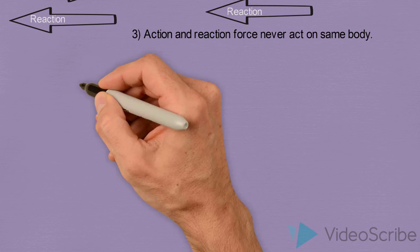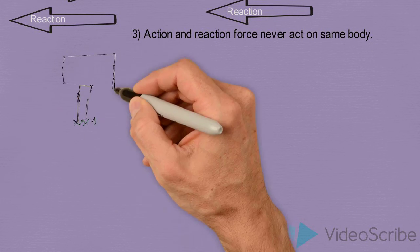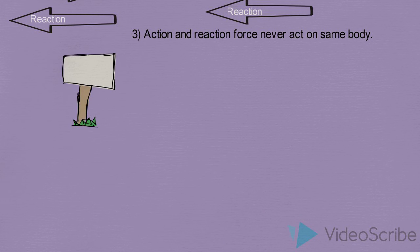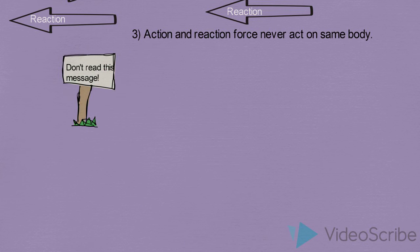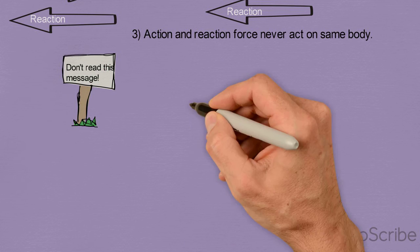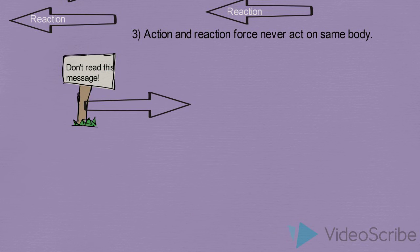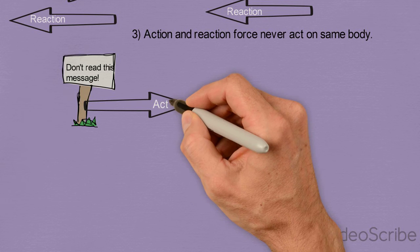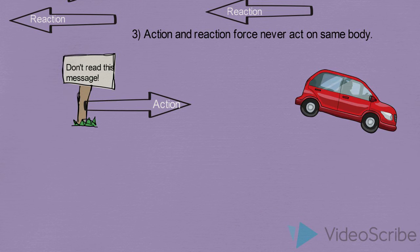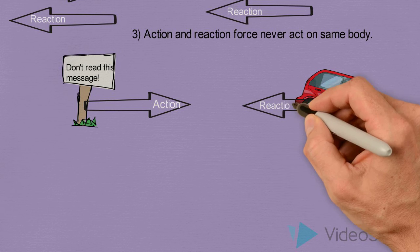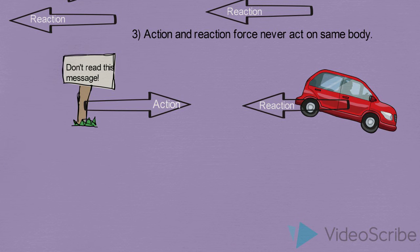I see many people making this mistake when they write free body diagrams. Just know that action and reaction never act on the same body. In the diagram, the action was towards the right on the signboard, while the reaction was on the car towards the left — clearly acting on two different objects.